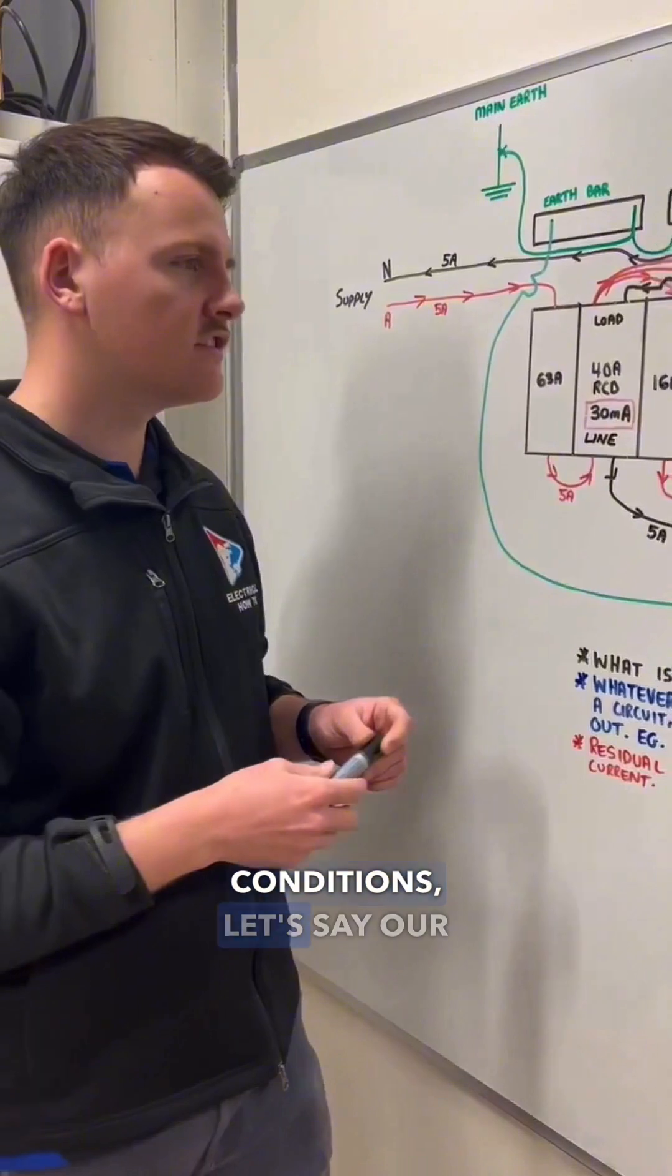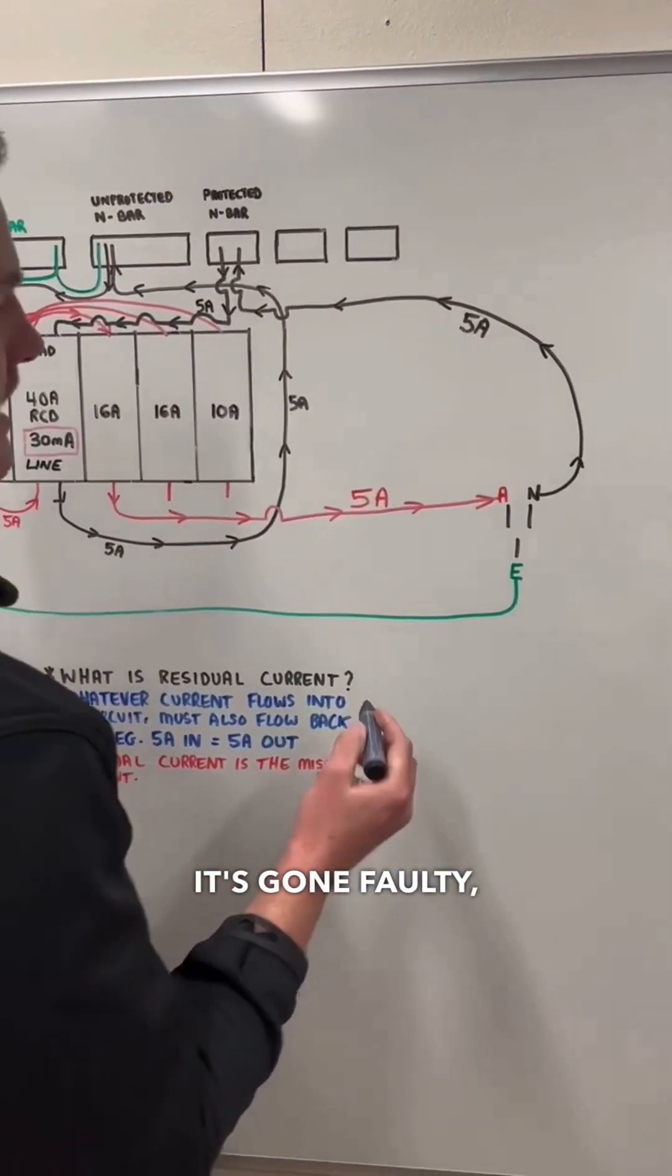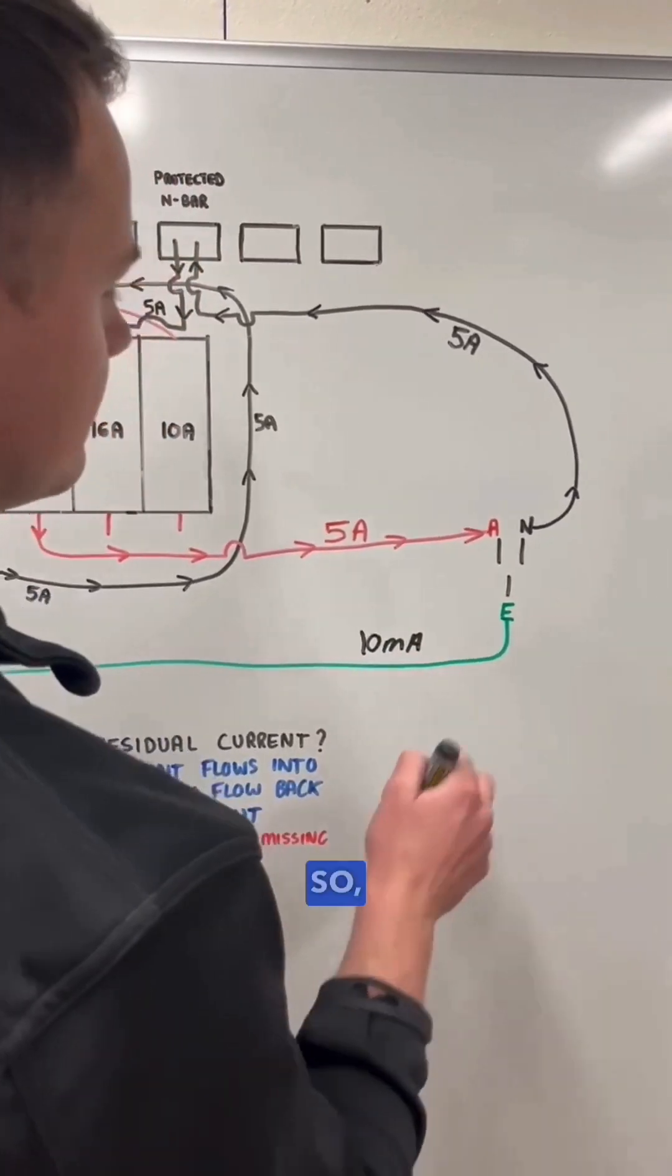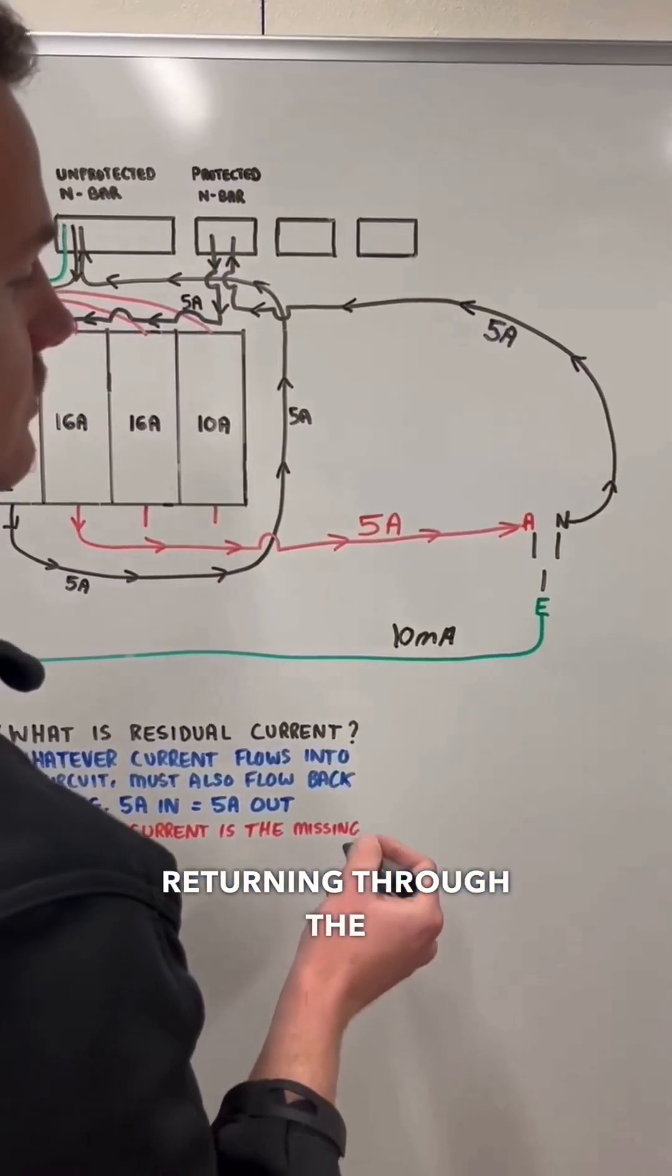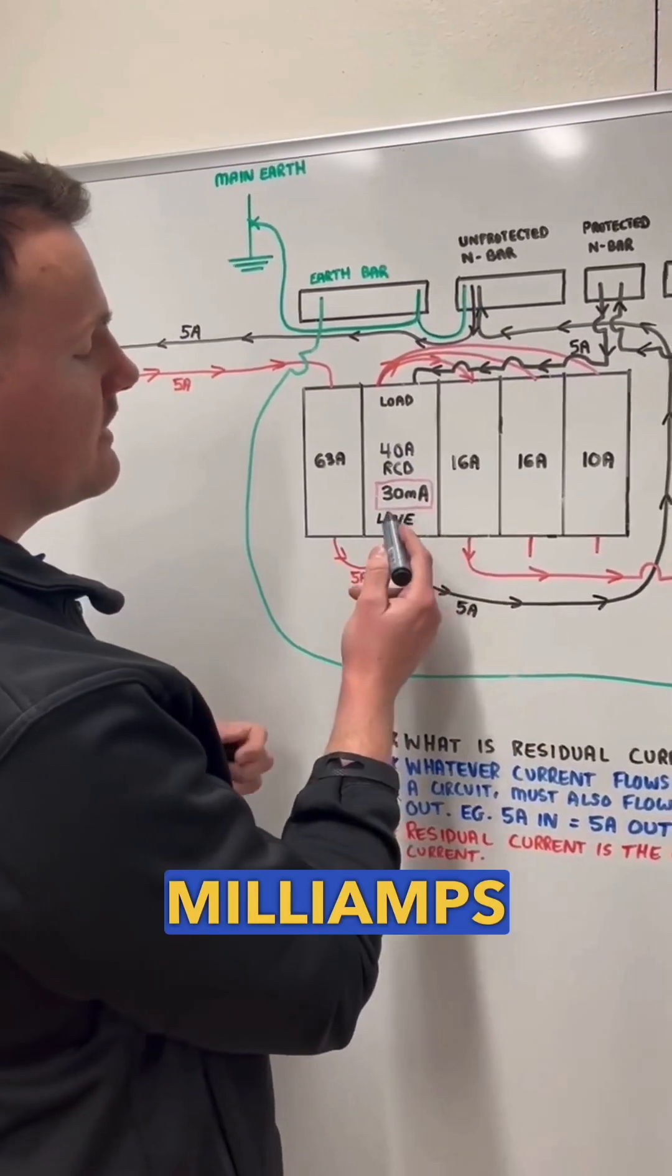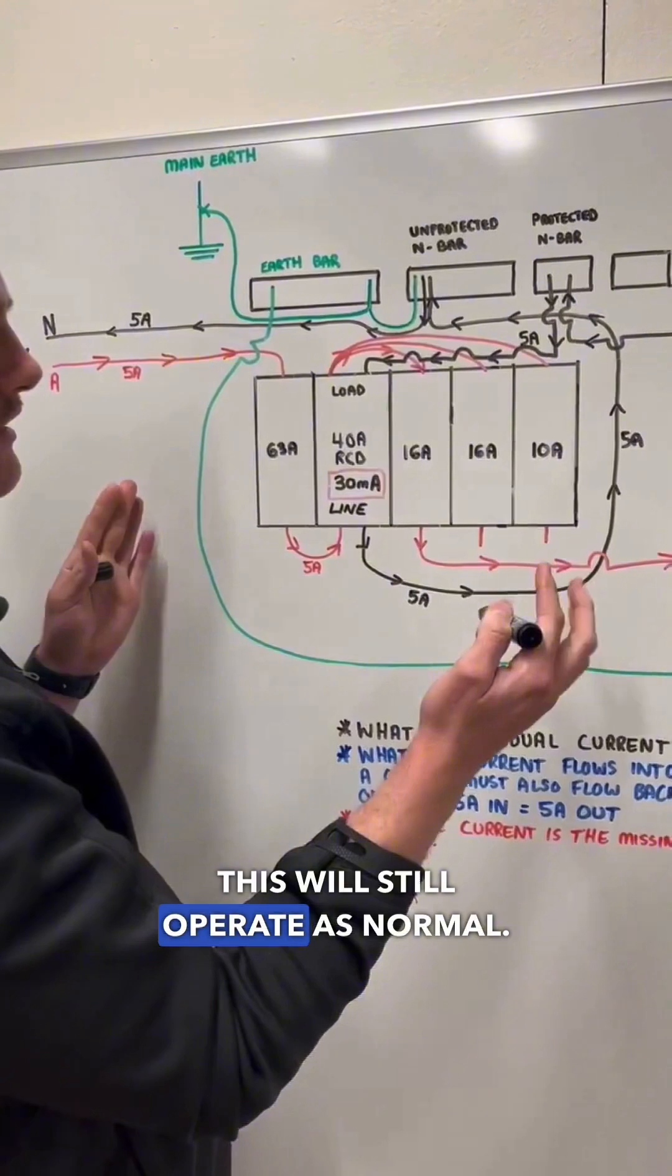Under fault conditions, let's say our hammer drill might be getting a bit old or it's gone faulty and we've got 10 milliamps travelling back through our earth. So now we're missing 10 milliamps returning through the neutral. Our RCD is still not going to trip because it's looking for an imbalance of 30 milliamps or greater. So this will still operate as normal.